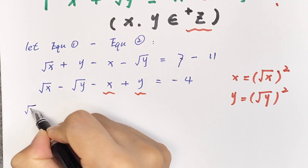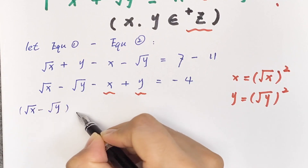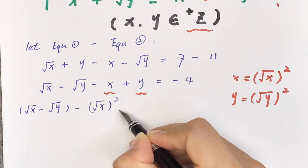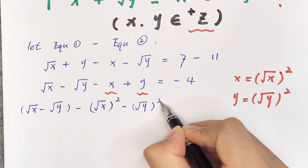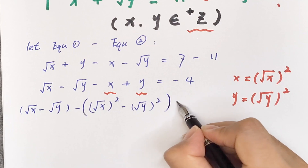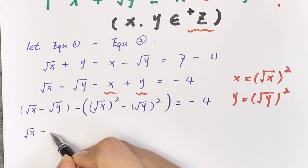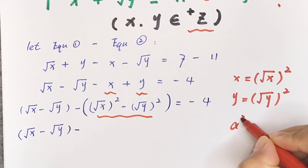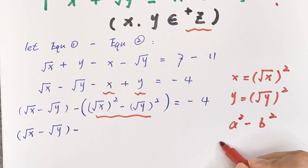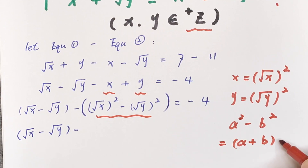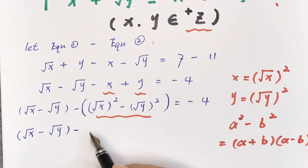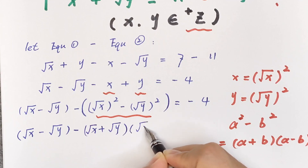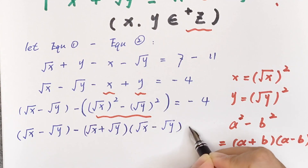So it becomes: square root of x minus square root of y, minus (square root of x squared minus square root of y squared), equals negative 4. Using the identity a squared minus b squared equals (a plus b)(a minus b), we factor. This gives square root of x minus square root of y, times (1 minus square root of x minus square root of y), equals negative 4.